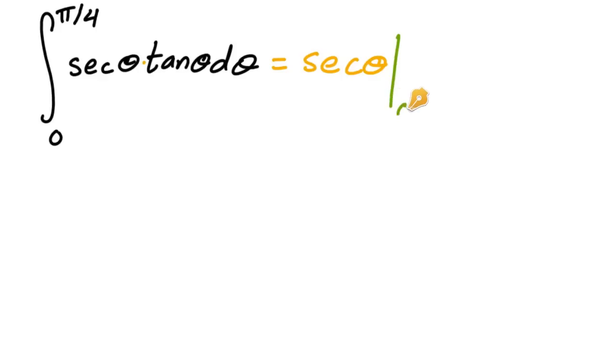And so that's it. That's all you have to do. And then of course, just plug it in. So what we have is secant of π over 4 minus secant of 0.